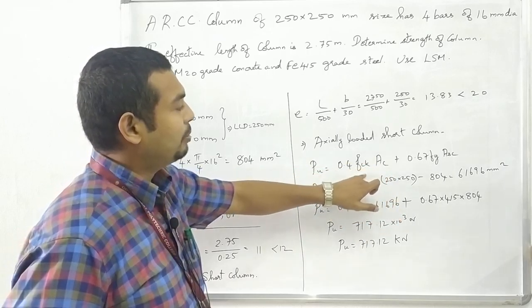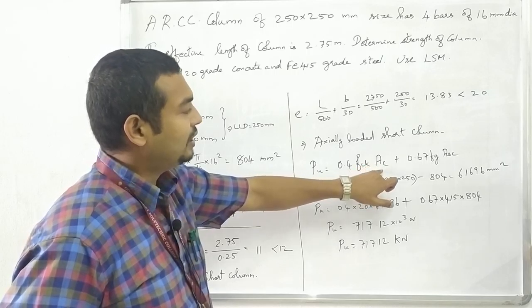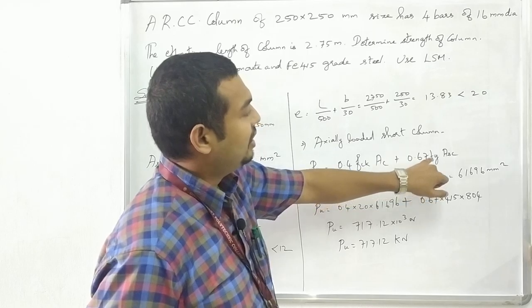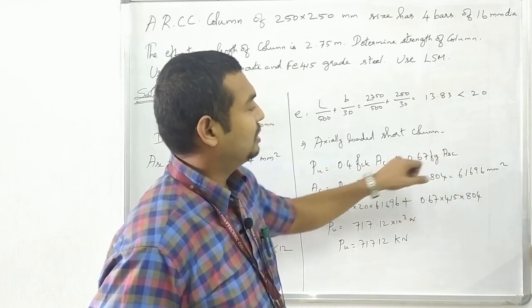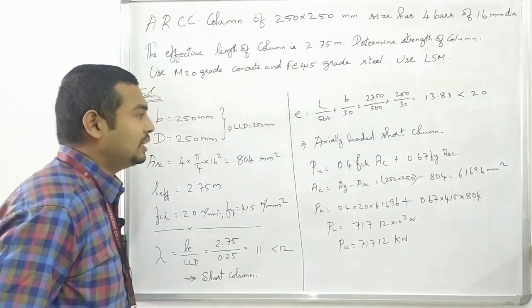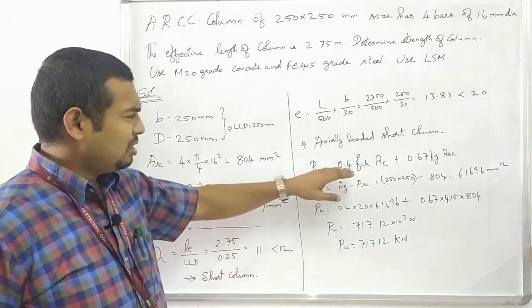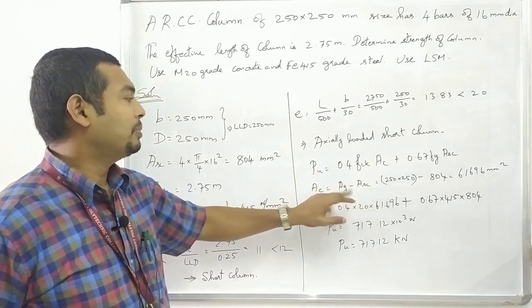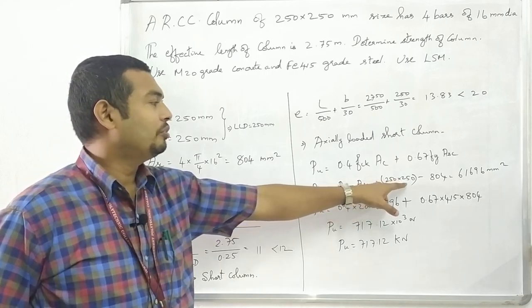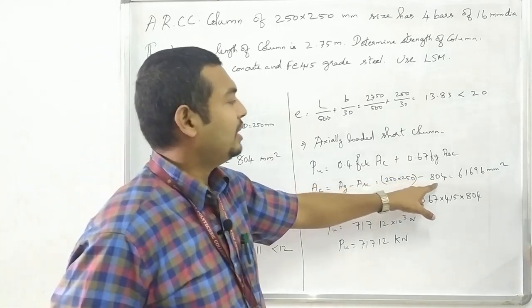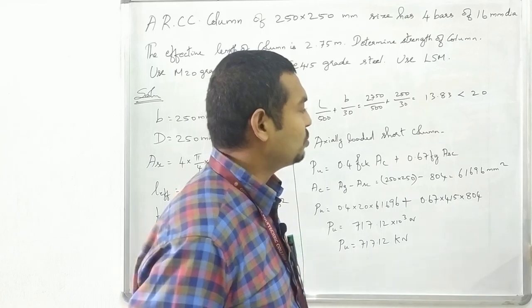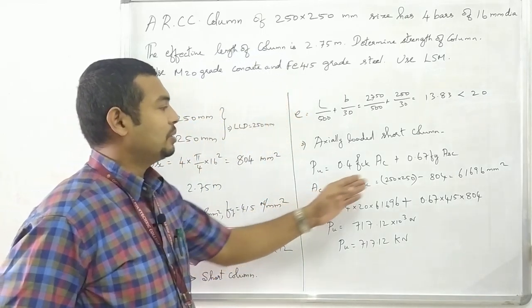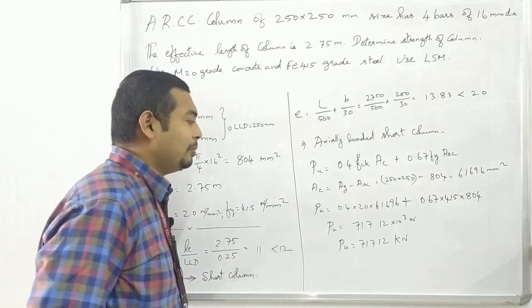In this equation, we have compressive force into compressive area and tensile force into tensile area to get the total strength. This is compressive stress in concrete times area of concrete in compression, plus compressive stress in steel times area of steel in compression, which gives the ultimate strength.